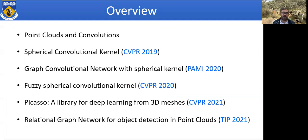I'll also present Picasso, which is a CUDA-based library we have developed specifically for deep learning from 3D meshes as well as point clouds. And finally, I'll present our work on relational graph networks for object detection in point clouds. The work that I'm going to present covers three CVPRs, a PAMI paper, and a TIP paper.